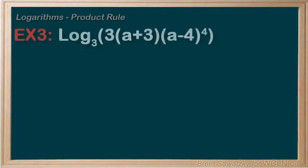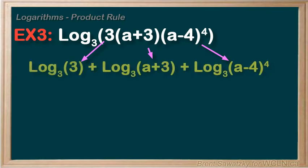Example 3. Expand, and this one's definitely a bit more complicated. So let's give it a try. Breaking it all up using our new product rule, we would have log base 3 of 3 plus log base 3 of (a+3) plus log base 3 of (a-4) to the power of 4.